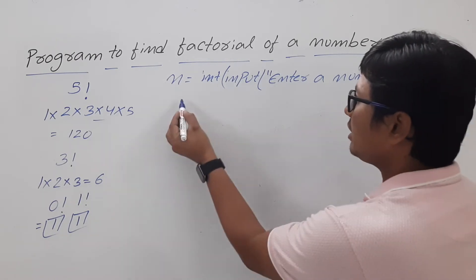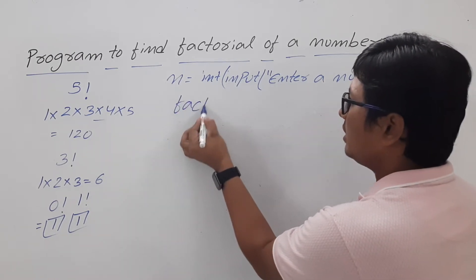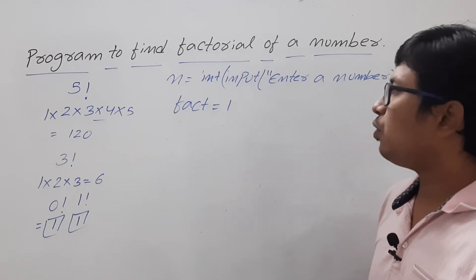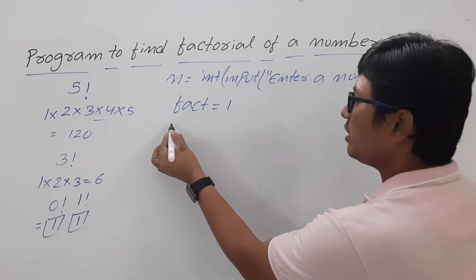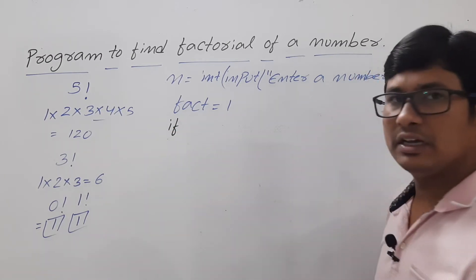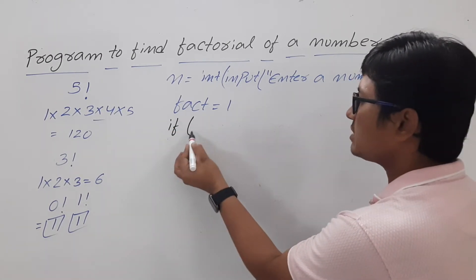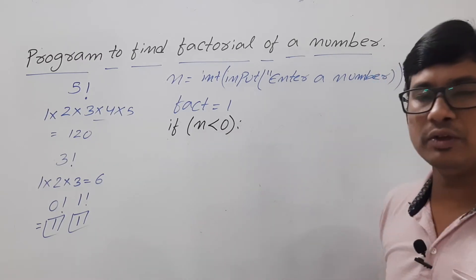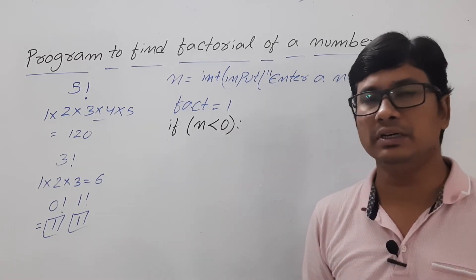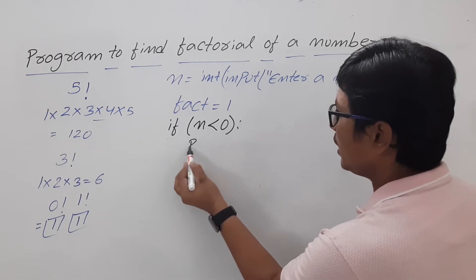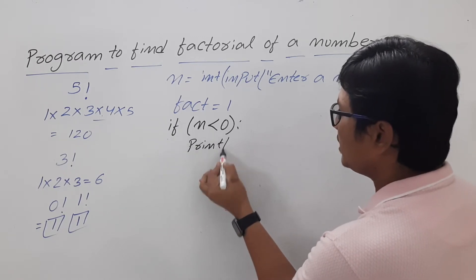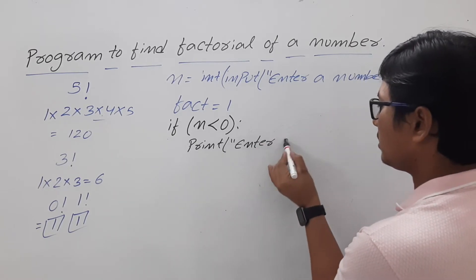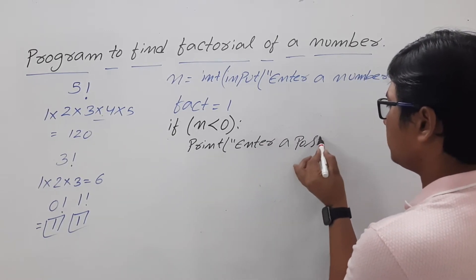Whatever the user enters, it will be returned as a string. I am converting it into an integer and that value will be stored in the variable n. Then I will take a variable called fact and initialize it to 1. Next, I need to verify whether the user's input is less than 0. If the user has entered a negative number, I will display 'please enter a positive number'.